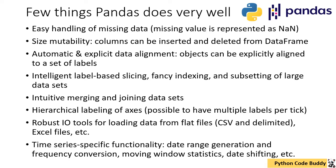Then there is size mutability — columns can be inserted and deleted from a Pandas DataFrame very easily. All Pandas DataFrames are rows-and-columns matrices, and the data is stored in columns which can be easily inserted or deleted from the dataset. Then you have automatic and explicit data alignment, where objects can be explicitly aligned to a set of labels. This is also important when doing various analysis and operations with data tables.